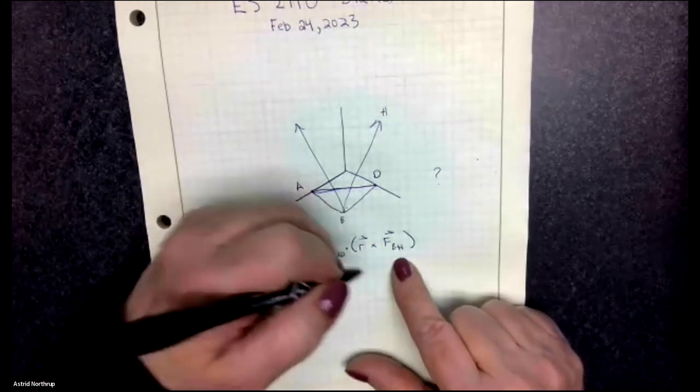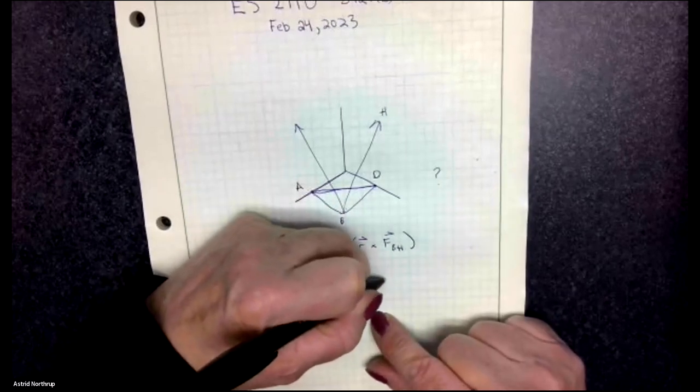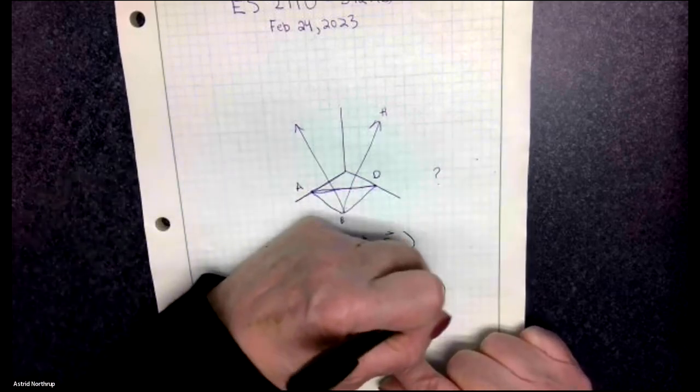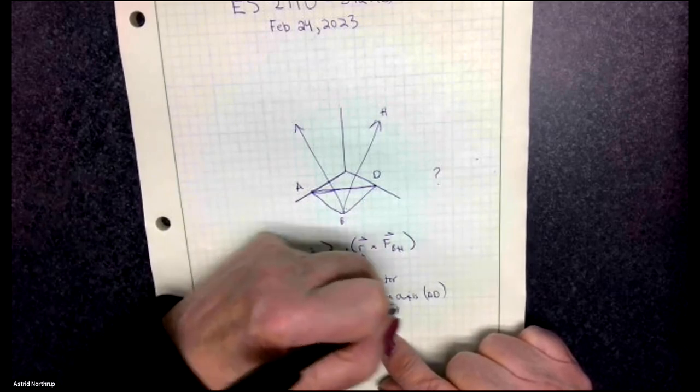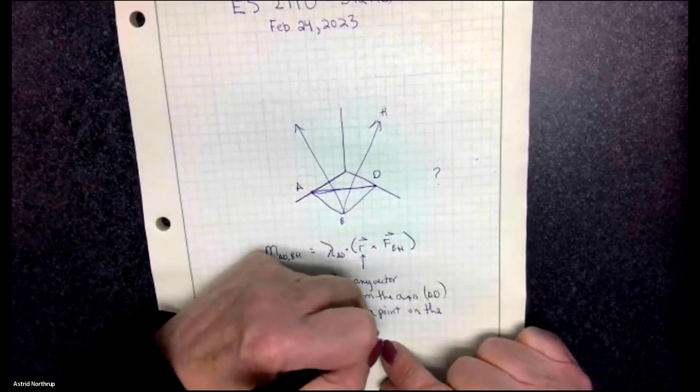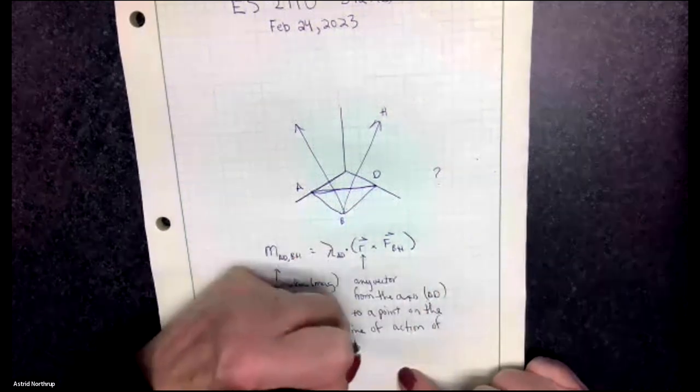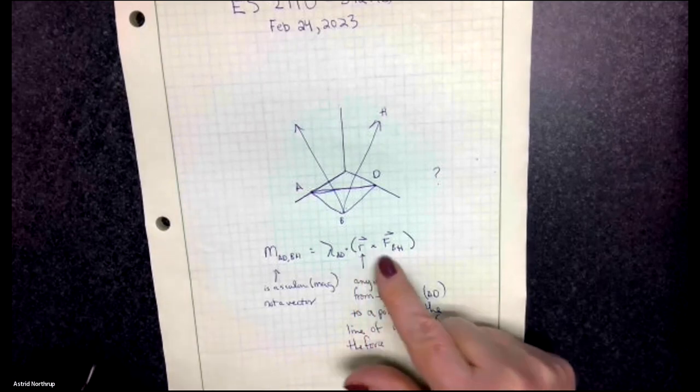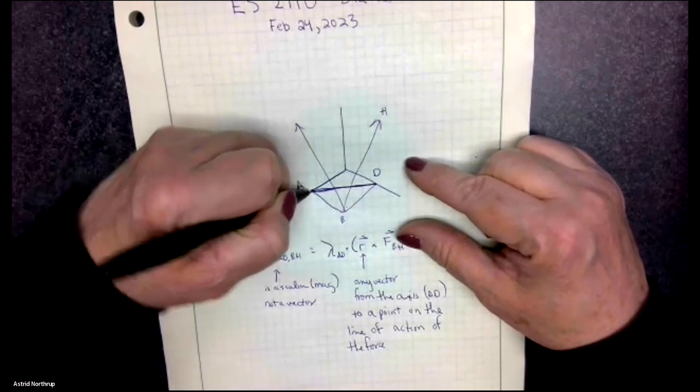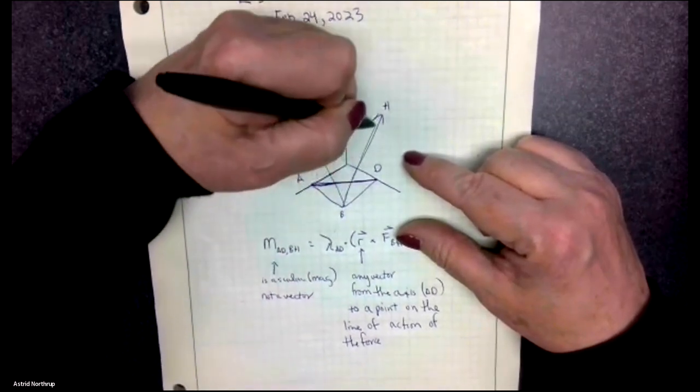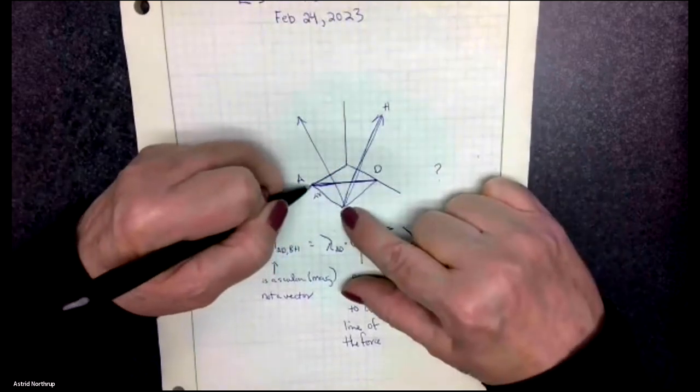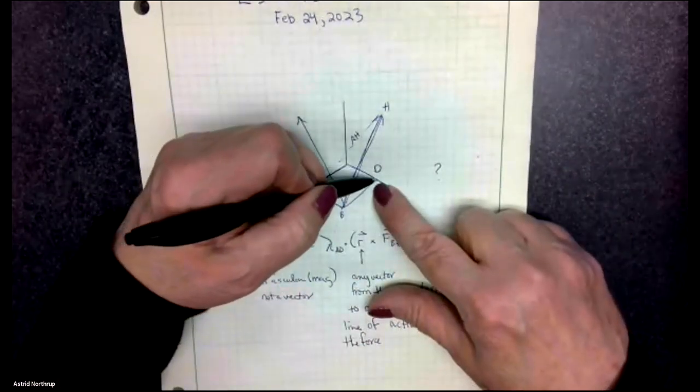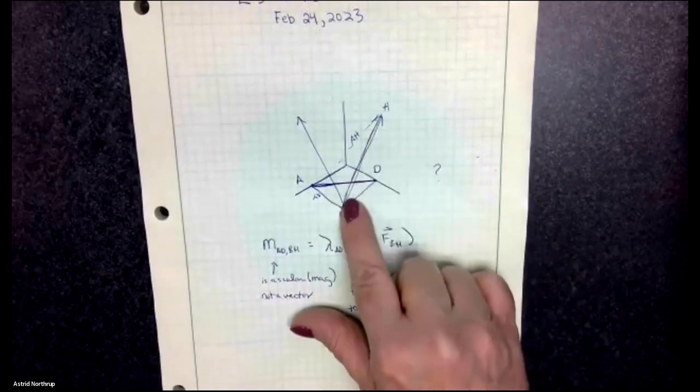Now, the other part is, this R can be any vector from the axis, in this case AD, to a point on the line of action of the force. So that means that you can choose R based on convenience. For example, here's the line AD that I'm taking the moment about. And here is the line of action of the force. So you could choose R to be from just A to B, or you could choose it to be A to H, which would be very much more difficult. Or you could choose it to be D to B or D to H, or any point on this axis to any point on the line of action of this force.